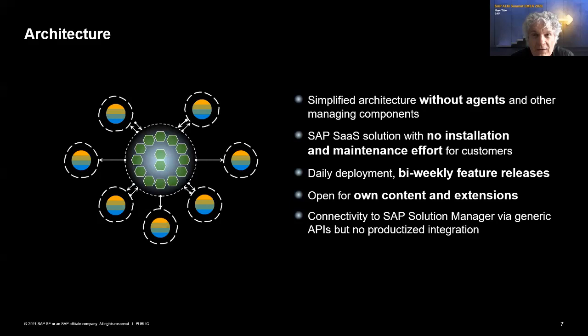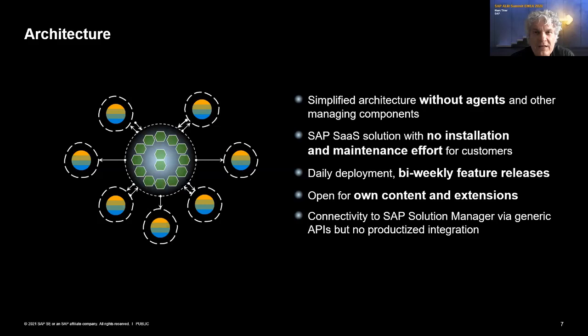Regarding connectivity between Solution Manager and Cloud ALM if running both in parallel: in the long run, customers should only have one ALM solution — an orchestra should not have two orchestrators. However, in the short and middle term, there may be a need to run two ALM solutions in parallel. We don't plan for any federation between Solution Manager and Cloud ALM, but both products have APIs so you can integrate both on a project basis if needed.